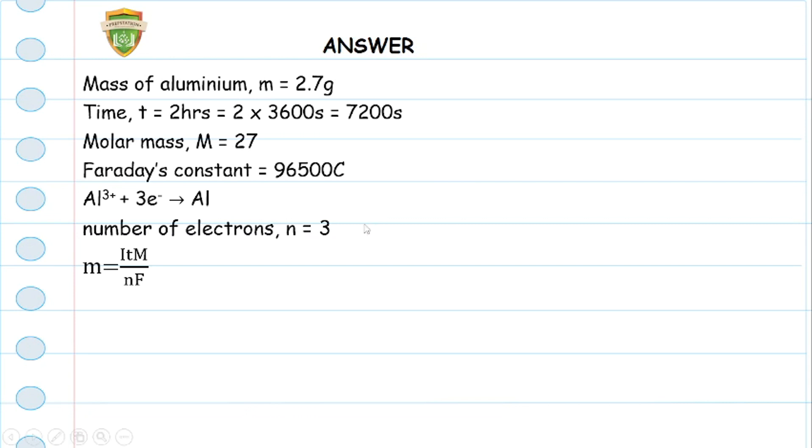The formula for the mass deposited is actually the current multiplied by the time by the molar mass divided by the number of electrons multiplied by Faraday's constant. We input all our values into this equation and then we make I, which is the current we are looking for, the subject of the formula. When you do that you will get your answer to be approximately 4 amperes, which is option C.